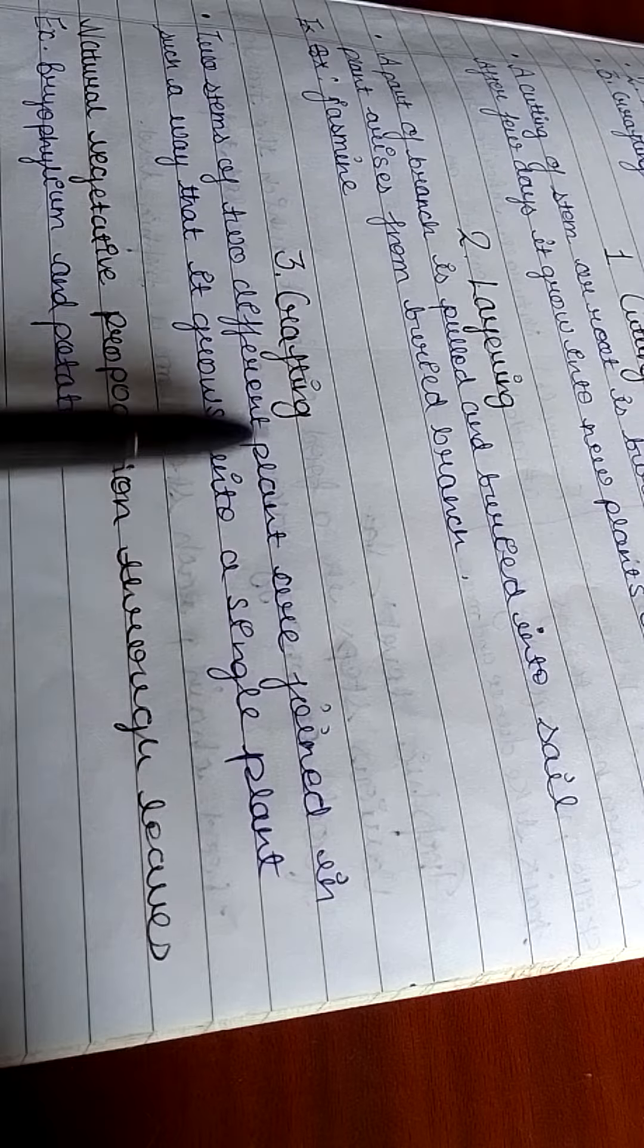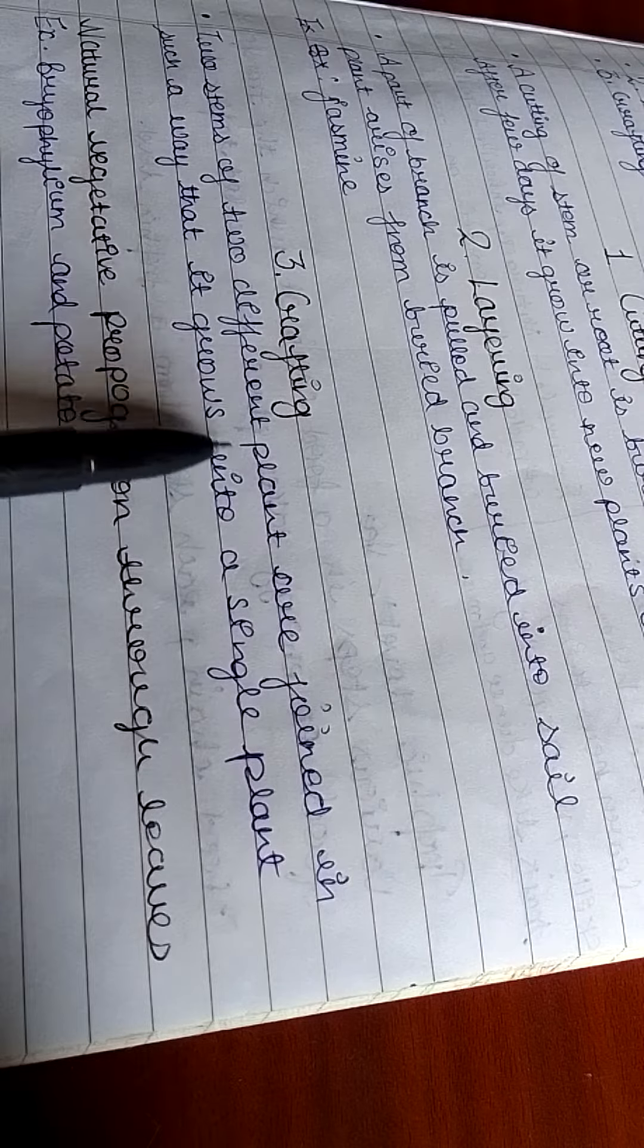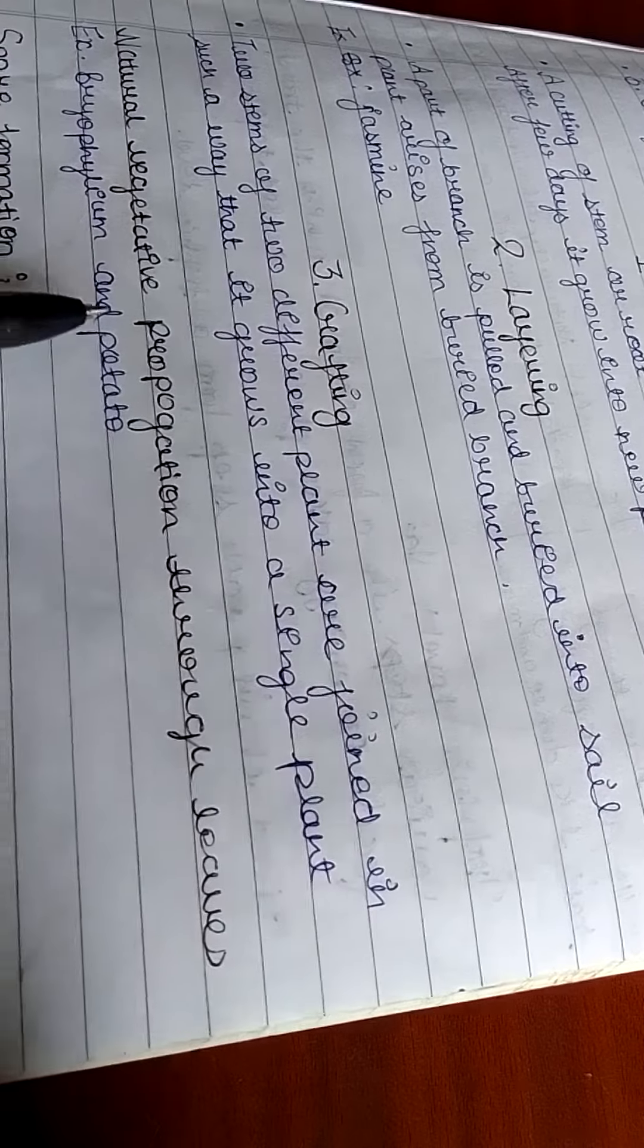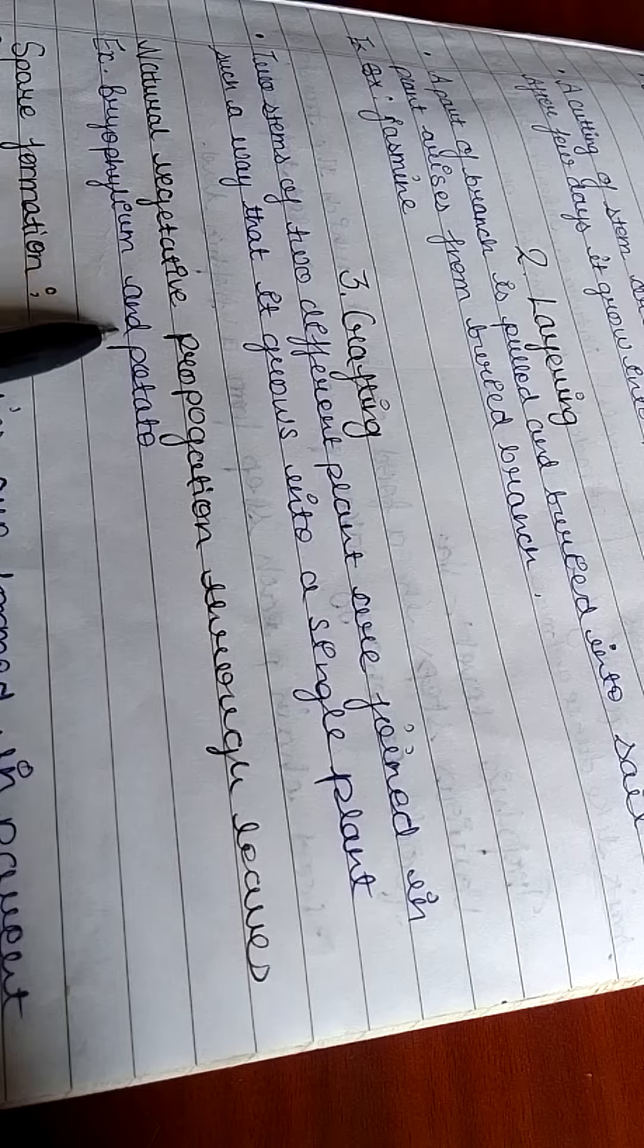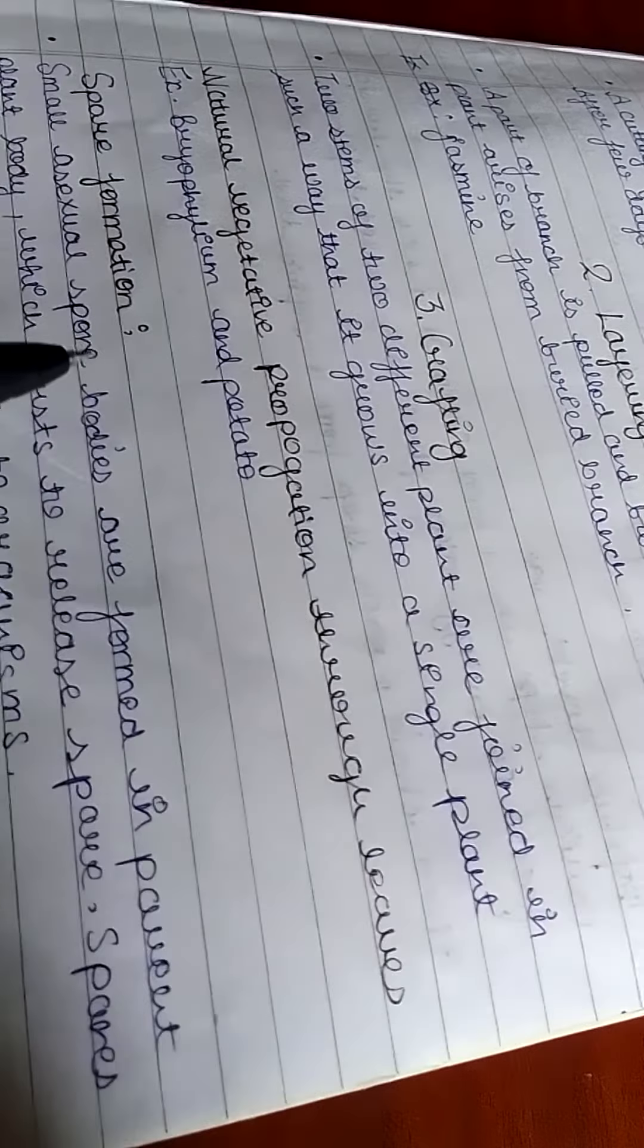are joined in such a way that they grow into a single plant. Natural vegetative propagation occurs through leaves. Examples: bryophyllum and potato. Spore formation: